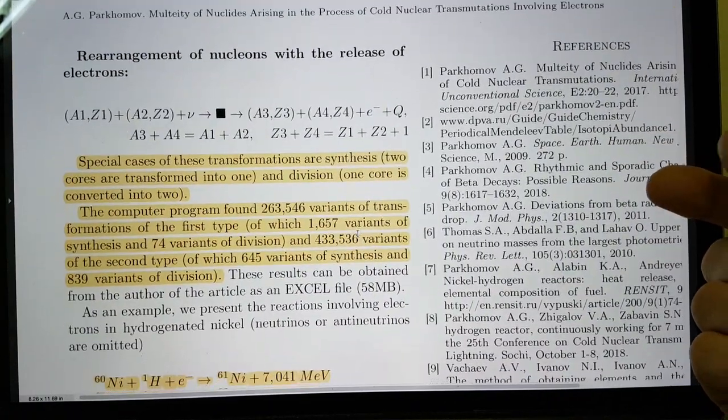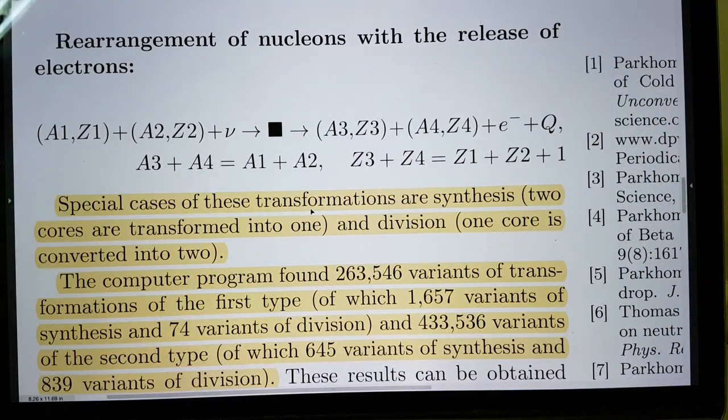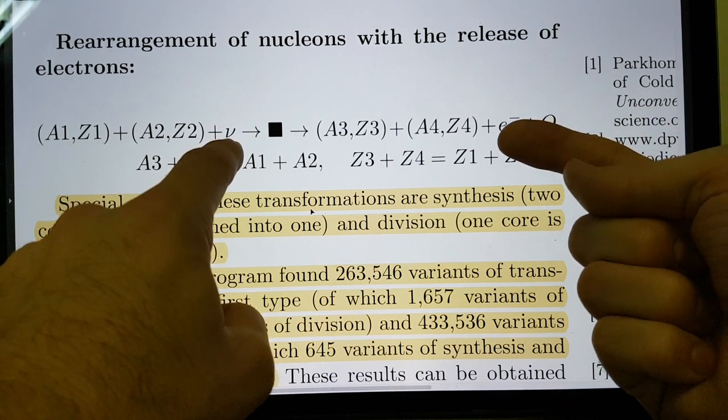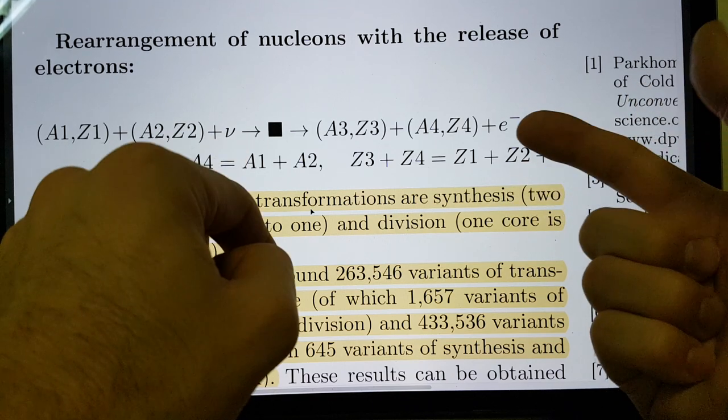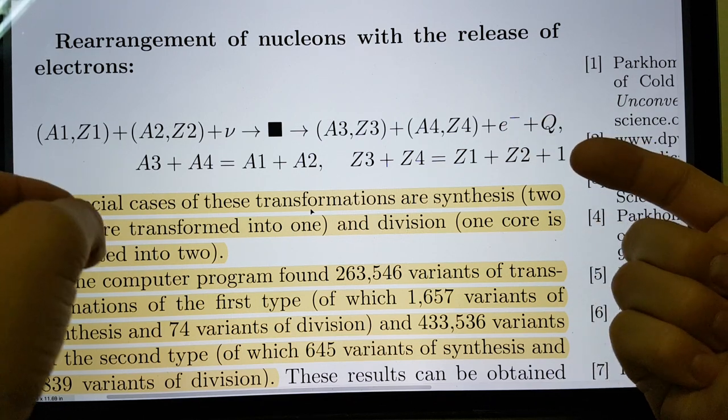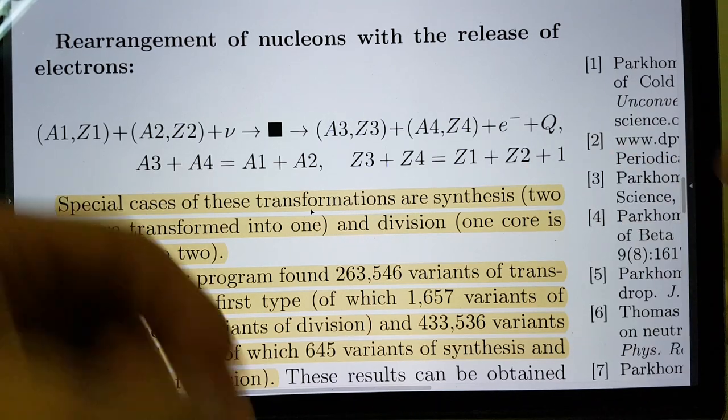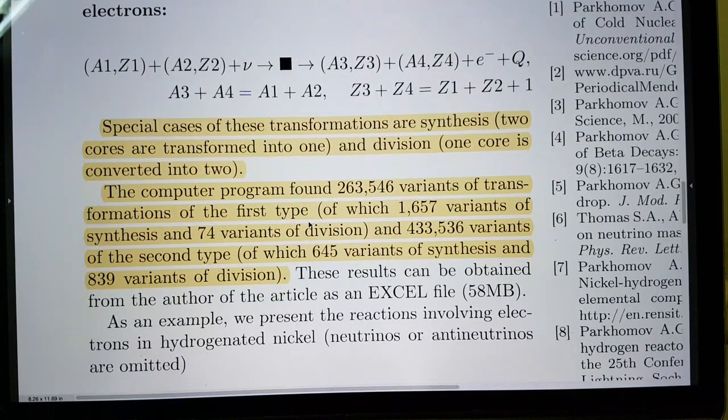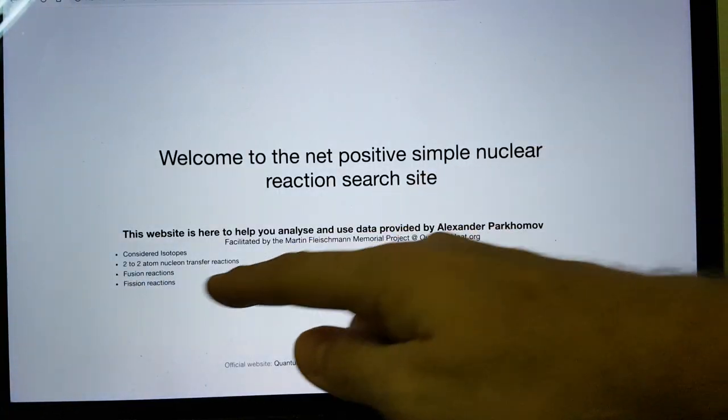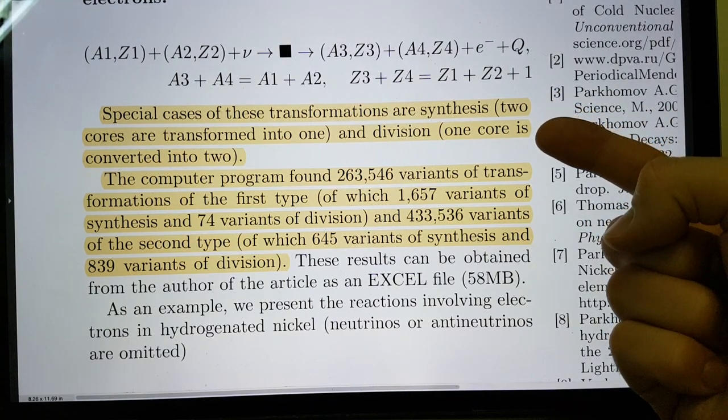And then the second case is rearrangement of nucleons with the release of electrons. So essentially a neutrino is going in and that is causing the decay of a neutron into a proton and electron. And so there we have it. And so again, you have an additional proton. So the Z number of one of the reaction products increases.